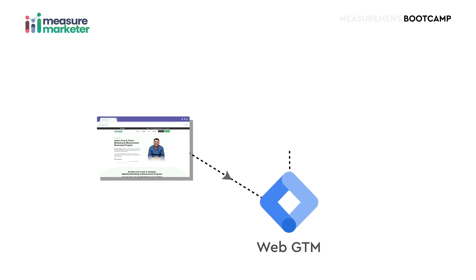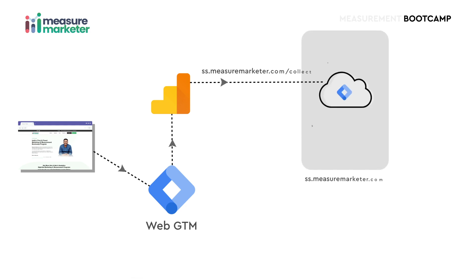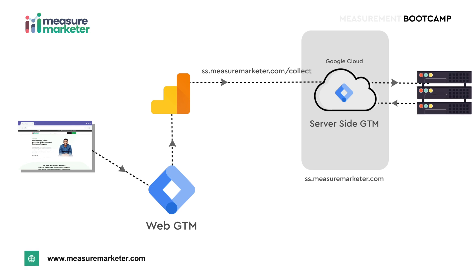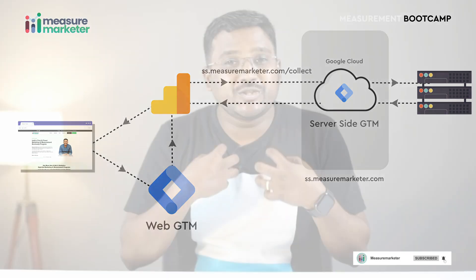When you implement server-side tagging like this, when a browser makes a request the website GTM loads, and it loads the analytics library. The analytics library now, rather than making a request to Google servers at google-analytics.com, makes a request to our cloud, which is mapped to our subdomain. Since this is no longer a third party but a first party — the request is going to our domain, our subdomain — no third-party ad blockers can block it.